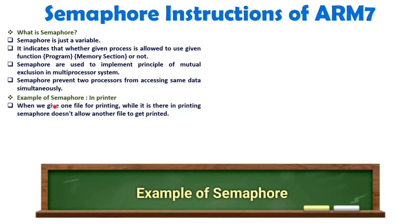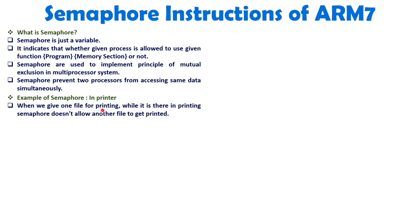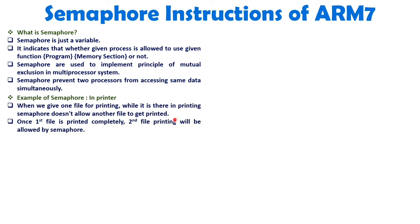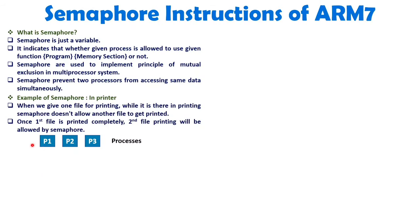Let me explain with a real-world example. When you send one file to a printer, during that time if you send a second file to be printed, the second file will not get printed at the same time. The second file will wait until the first file is done printing, and only then will it go for print. That happens because of semaphore.